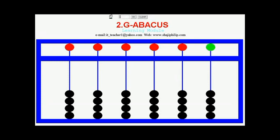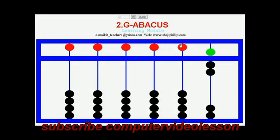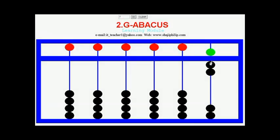And for setting 7, 5 plus 2. Five from the top and 2 from the bottom set, totaling 7.